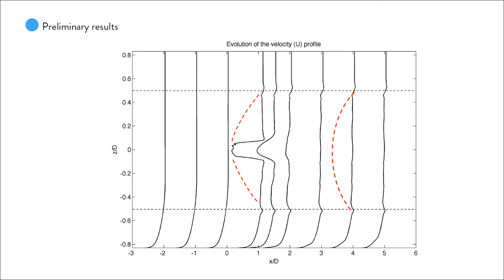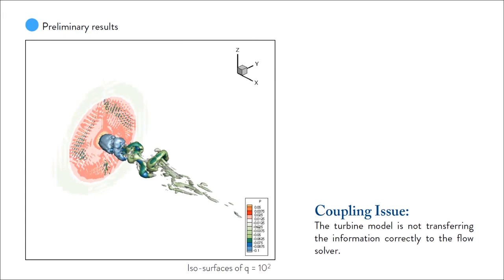So, what has been happening and what we're solving right now, it's a coupling issue between the turbine model and the flow model. So, the flow comes to the turbine model. It's calculating properly the coefficients and the forces. But, when it comes to give that information back to the flow solver and see the structures behind it, we're not doing that properly. So, it's a classic example of two models not communicating properly with each other.